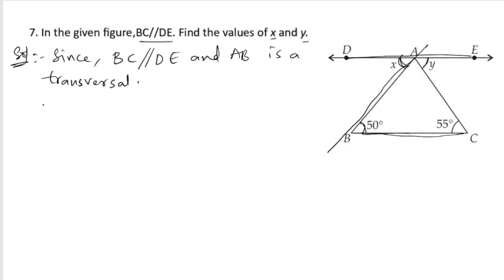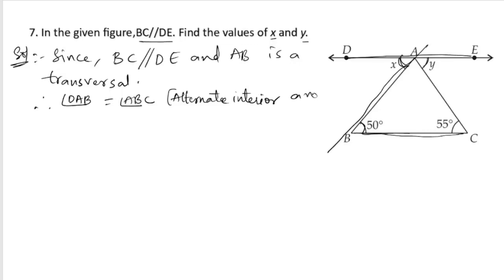Therefore, angle DAB is equal to angle ABC because they are alternate interior angles. So angle DAB is x and angle ABC is 50 degrees. Now we have the value of x, which is 50 degrees.